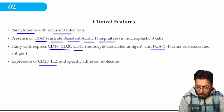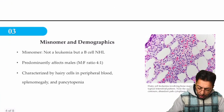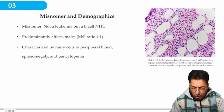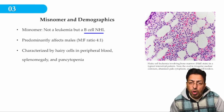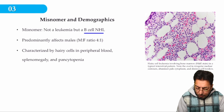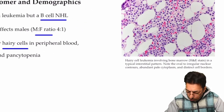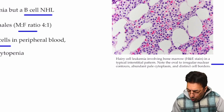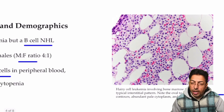In addition to CD25 and CD103, which are important cluster designations to remember. As mentioned at the onset, hairy cell leukemia is basically an indolent type of B-cell non-Hodgkin's lymphoma, with males predominantly affected. Important morphological features include the presence of hairy cells in the peripheral blood film with irregular nuclear contours, abundant cytoplasm, and distinct cell borders.